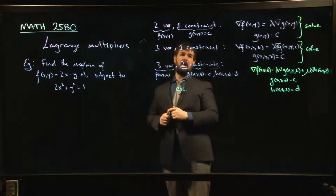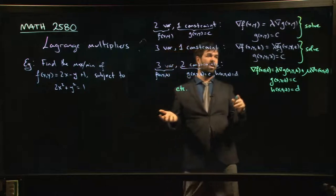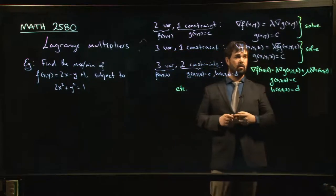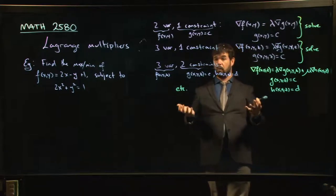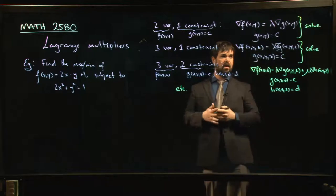Another example, same thing, but with three variables. The only thing that changes is now there's a z coordinate and a corresponding z component for the gradient vector. So now it's four equations, four unknowns - the three variables plus the multiplier. And again, you can solve.